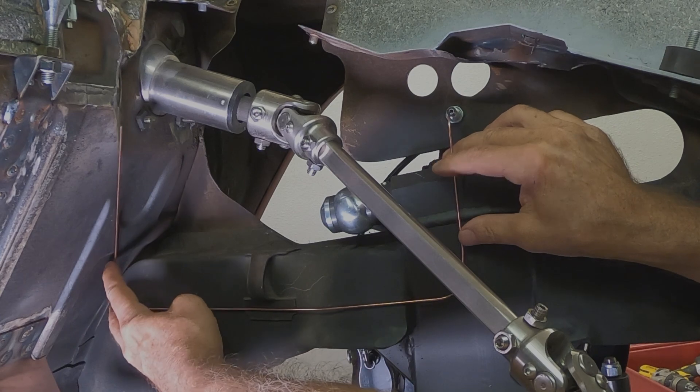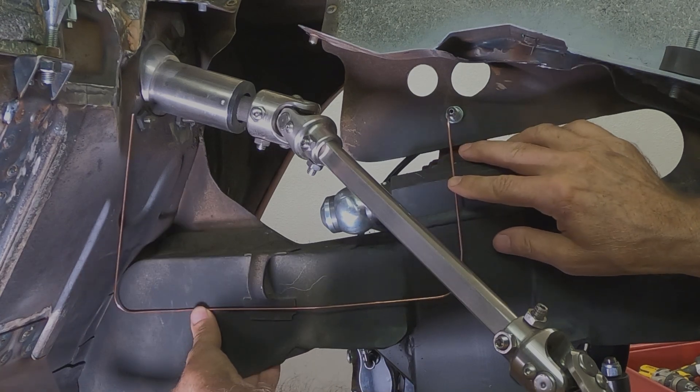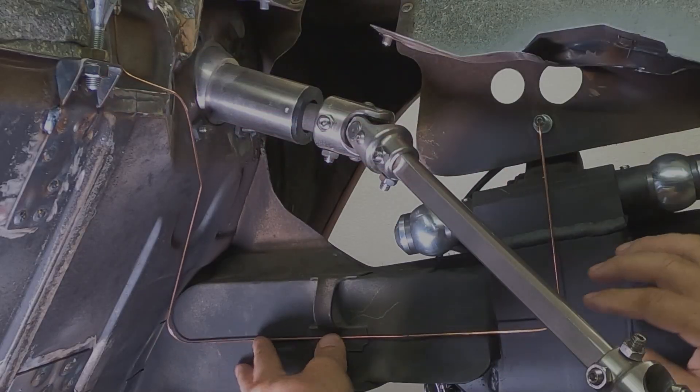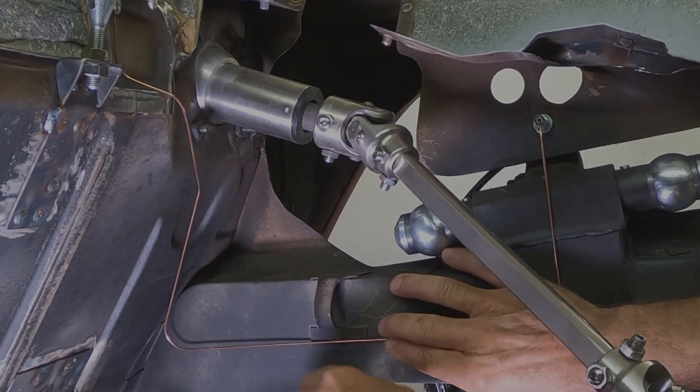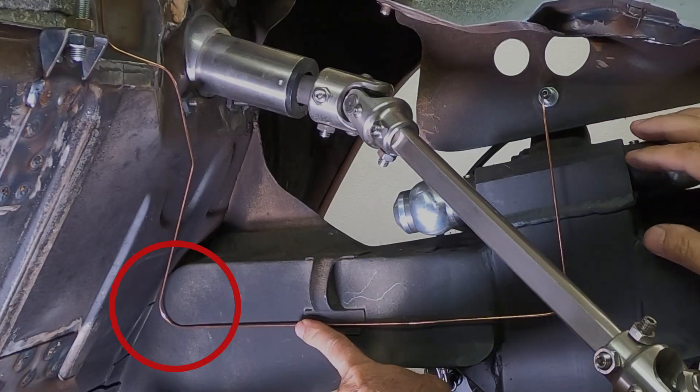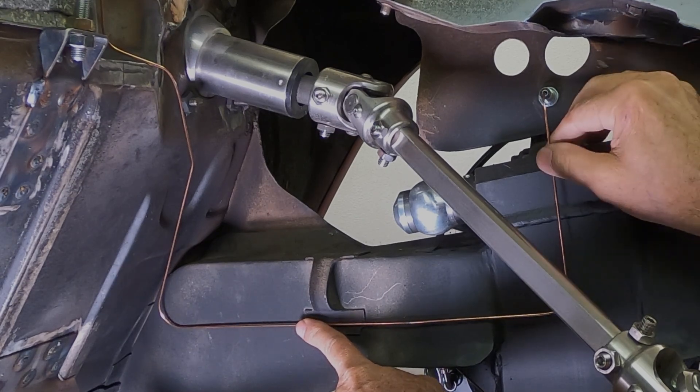At some point you will have to use measurements instead of a visual reference to determine the bending points. Make sure to include the tube radii in the measurements. I use the tubing bender to bend the template wire so that the transfer is more seamless.